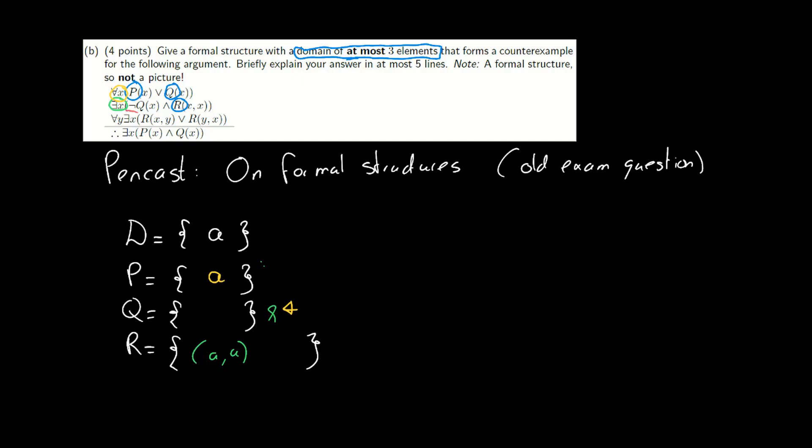For the third one, it says that for all y, there should be an x such that rxy or ryx is in r. R is true. Since there's only one value again, y equals x equals a, and aa is already in r, yeah, that seems to check out.